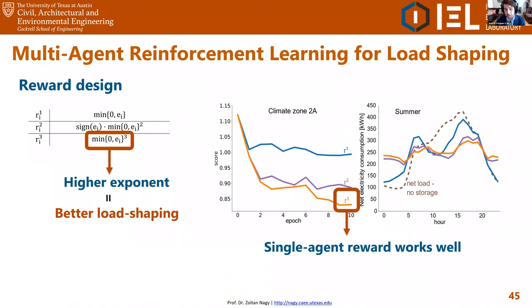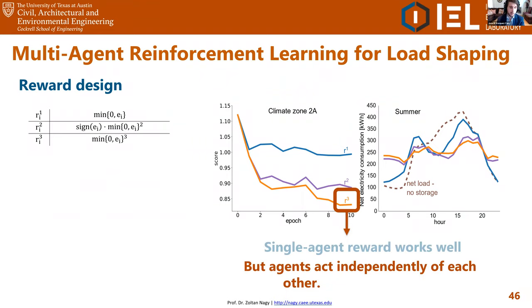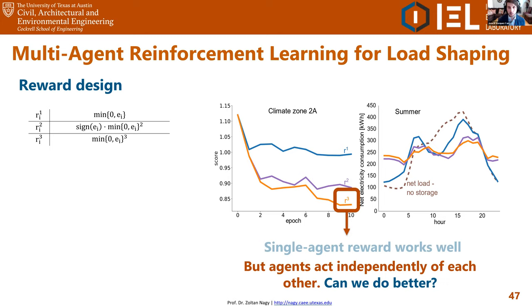However, this is a single-agent reward — each building only receives a reward depending on its own electricity consumption, so there is no real coordination. Each building is independently trying to flatten its own consumption curve. Is this optimal, or can we do better? Perhaps by allowing some coordination among buildings we can flatten the overall curve of electricity demand for the whole district much better than if all buildings act independently.